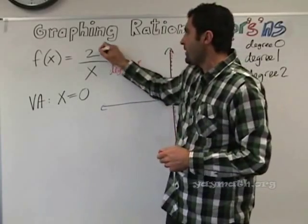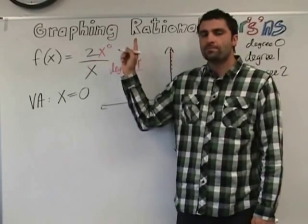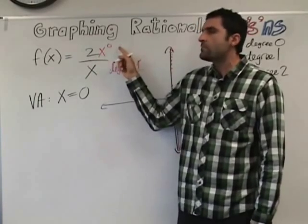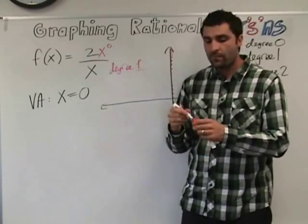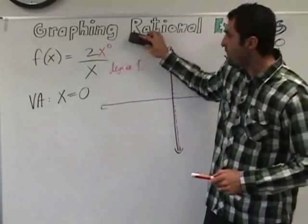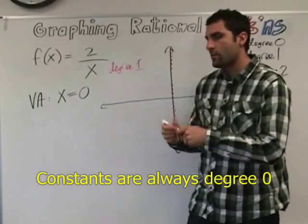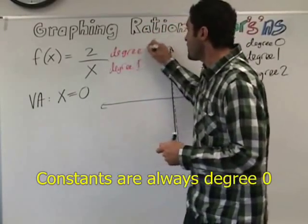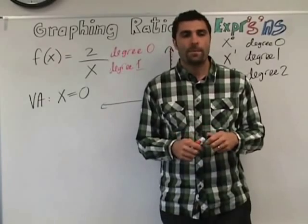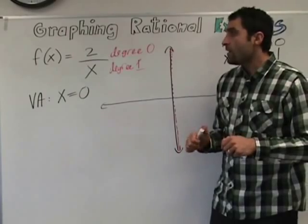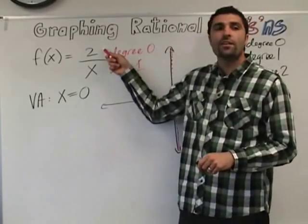It's sort of like saying 2 times x to the 0, and that is degree 0 — because it's like saying 2 times 1. So in other words, constants are always degree 0, and you hopefully have that right there on your paper. We're not simplifying — we're just regarding the degree of the numerator and the degree of the denominator. Because isn't the degree based on the exponent of the variable? Yes — so this is degree 0.